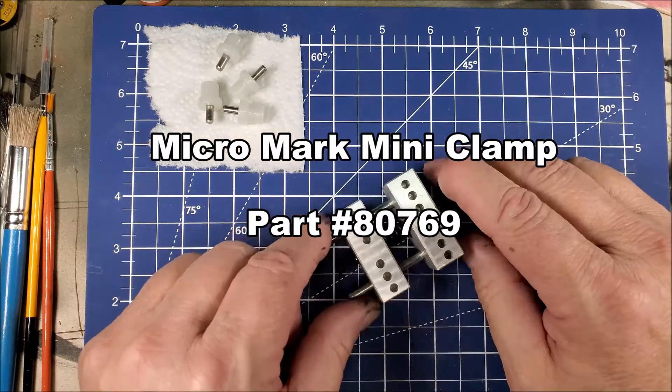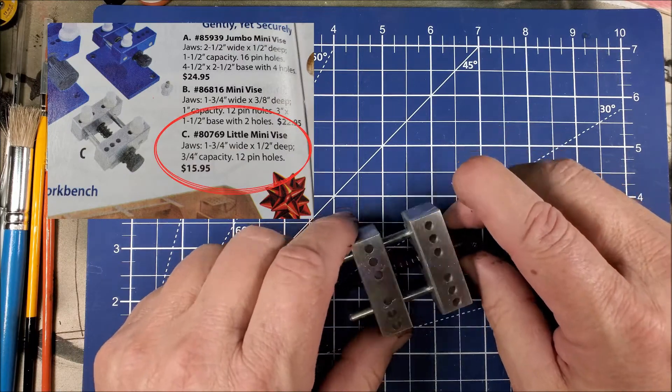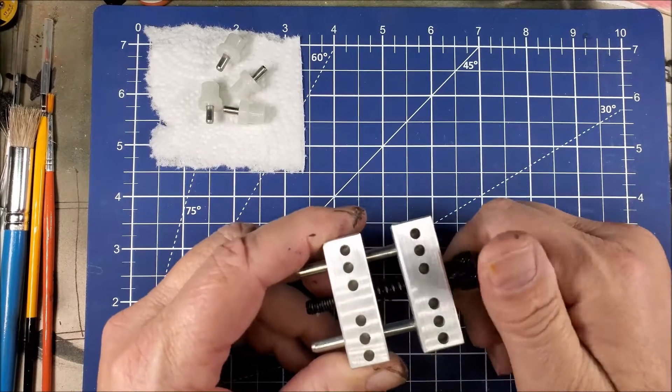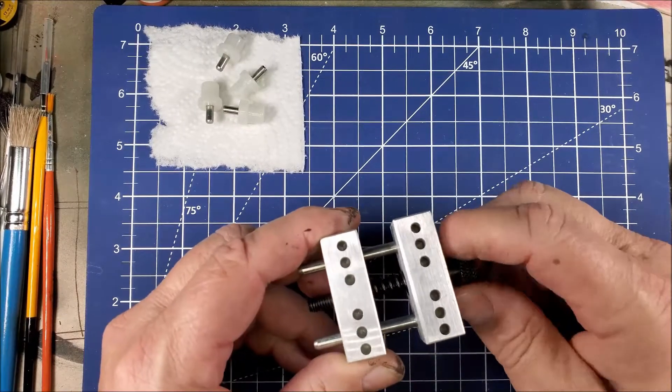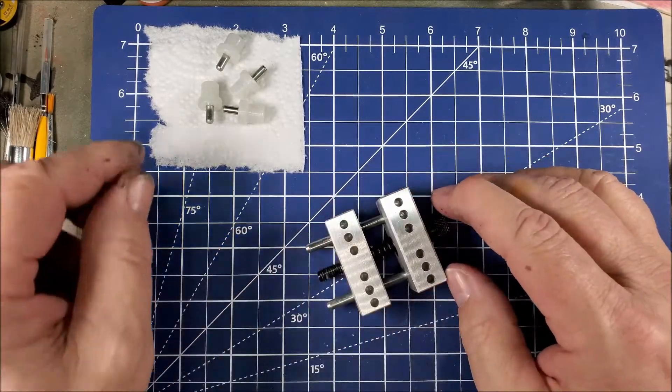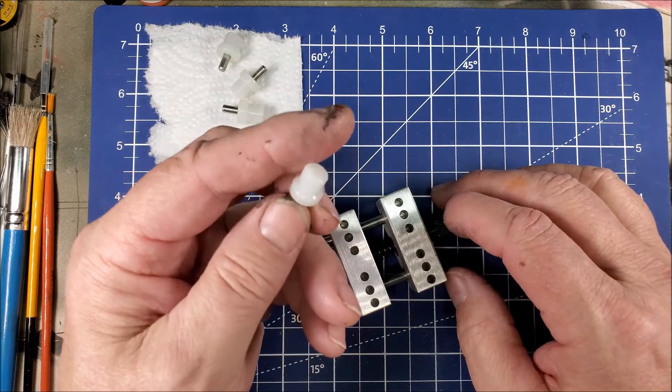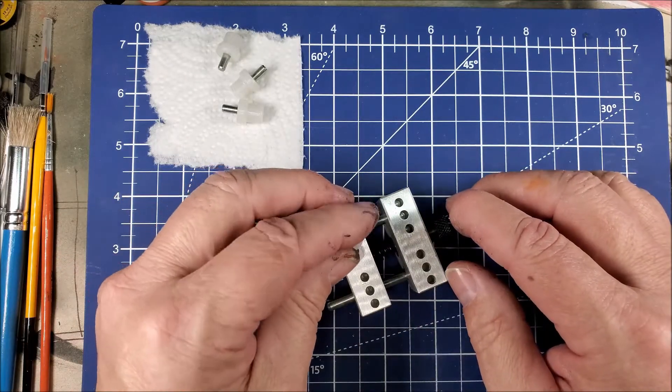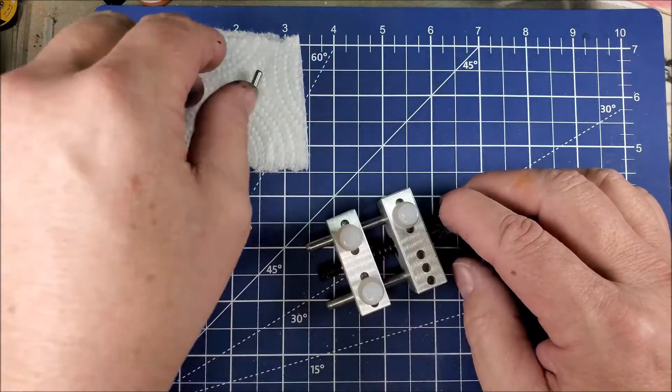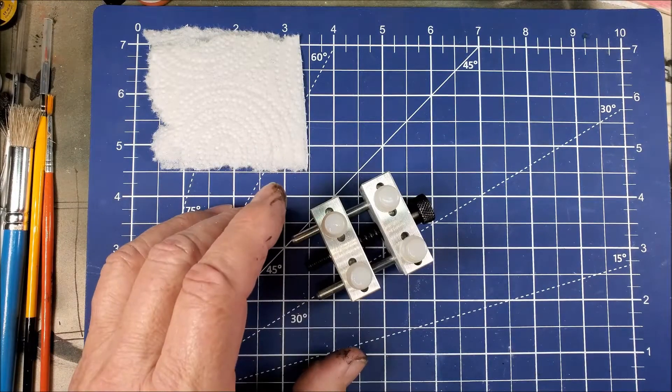I recently bought this small clamp from Micromark and the use I had in mind for this clamp was using it as a fixture for turrets to make turrets easier to paint or even put parts on. This clamp comes with four of these small pins and you can place them anywhere wherever they fit best for your use.